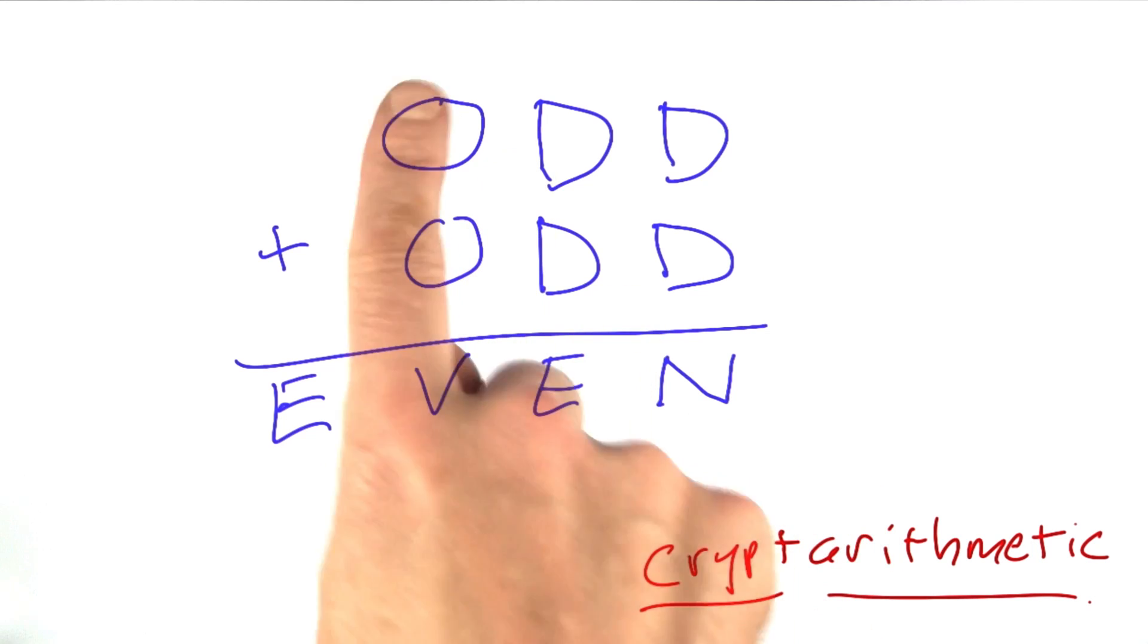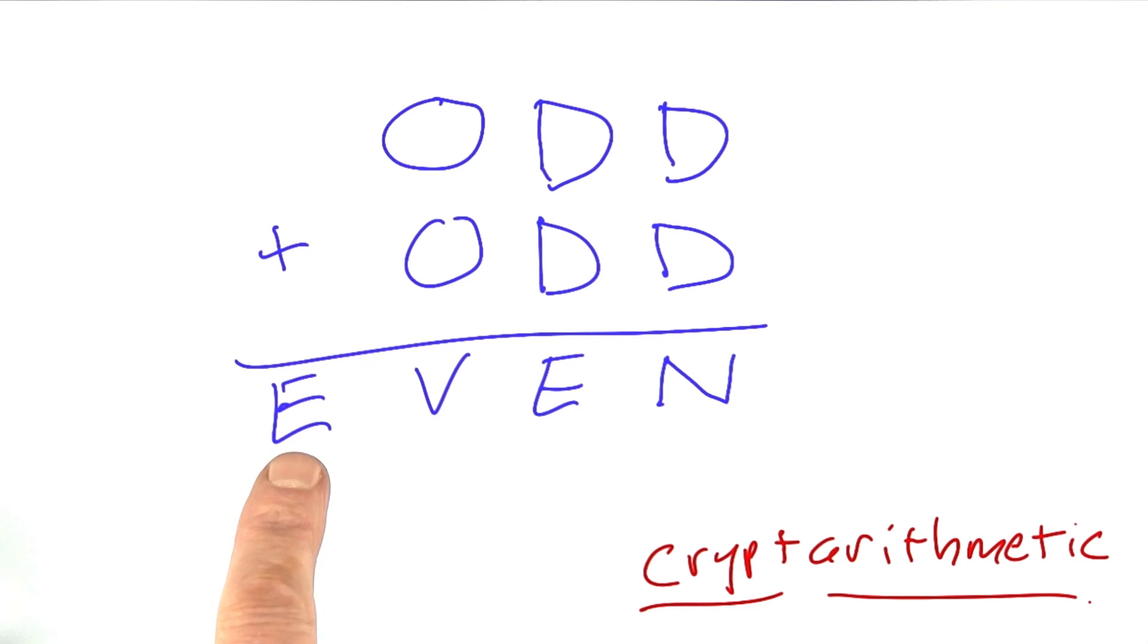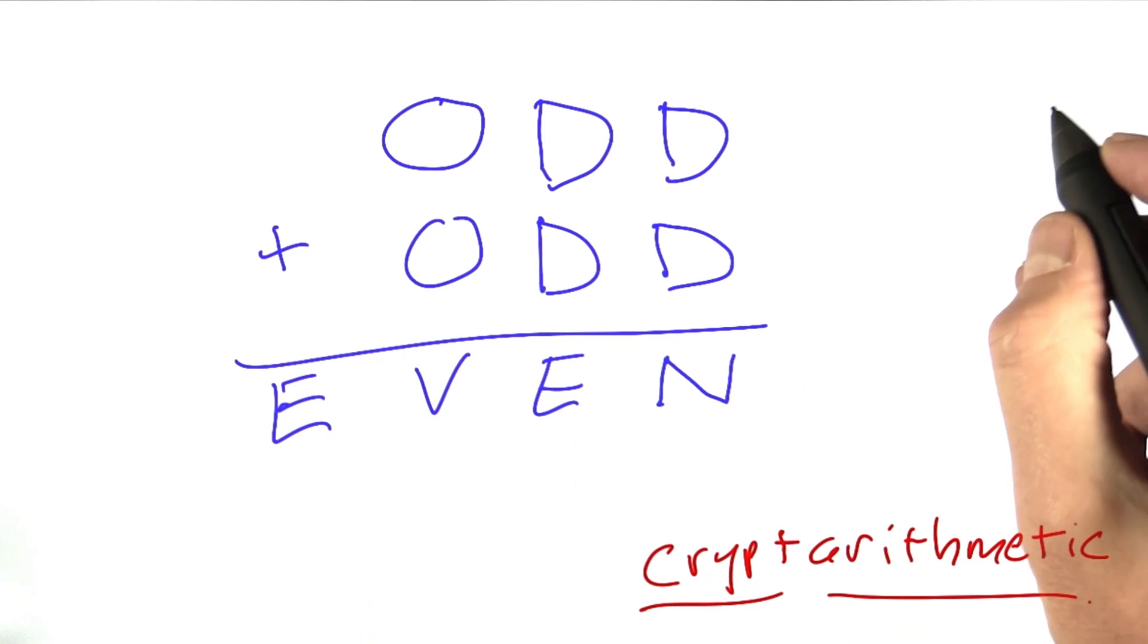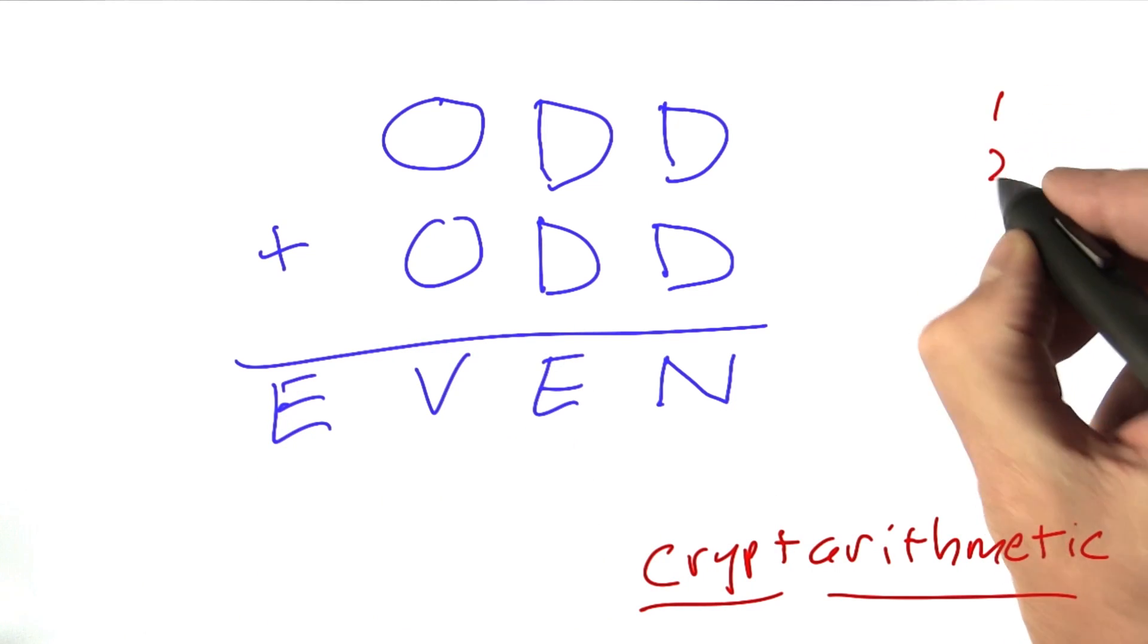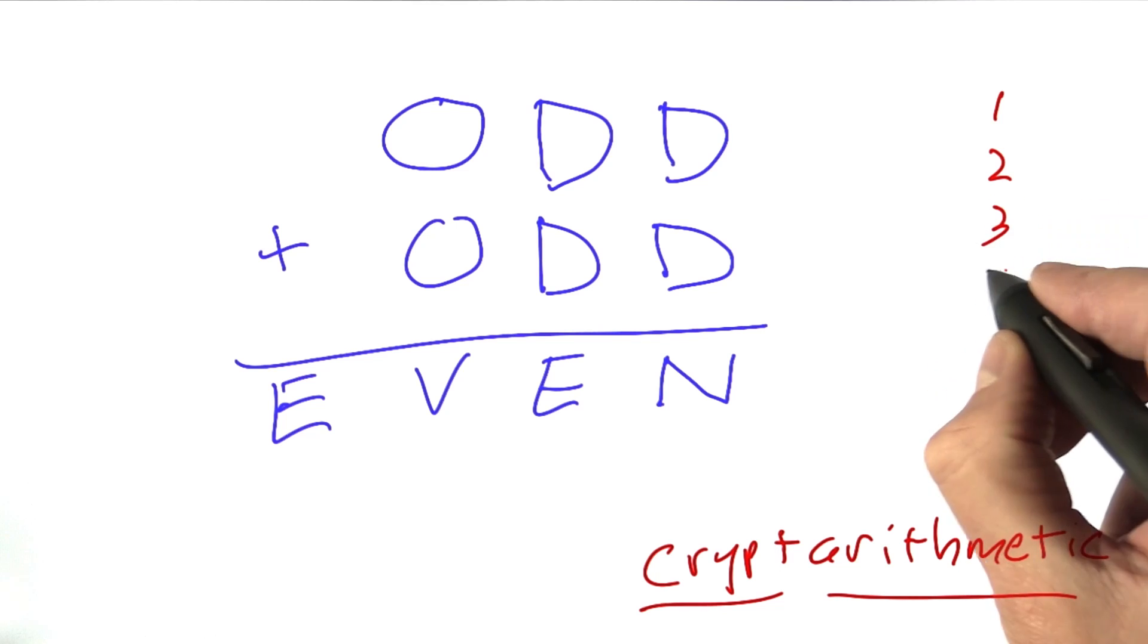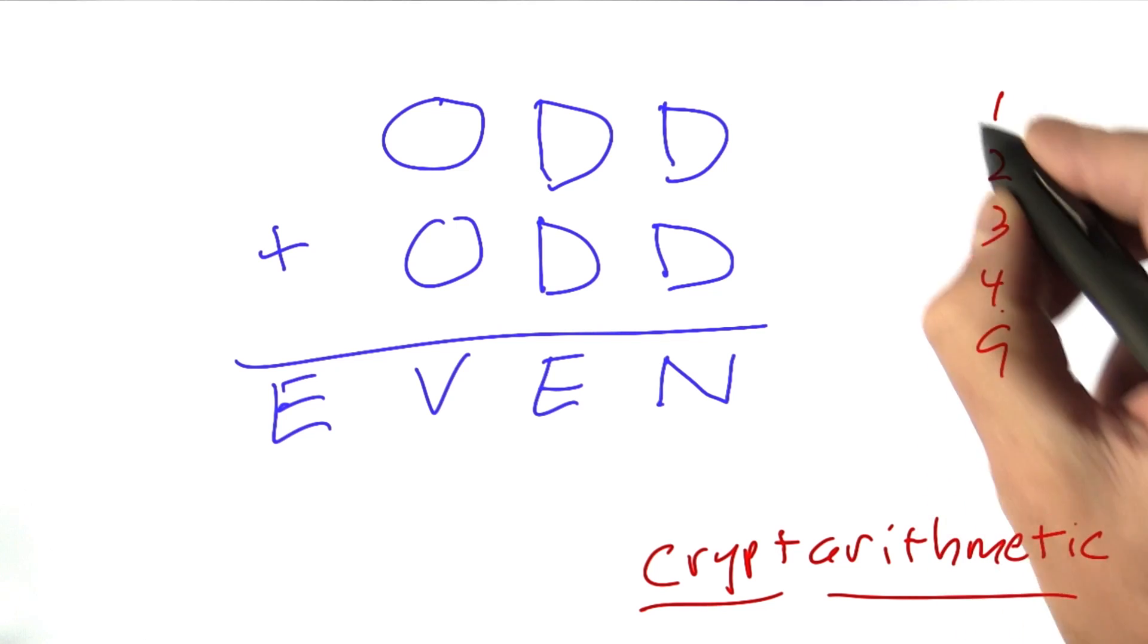For example, in this addition problem here, we have an addition problem of two three-digit numbers, and the result is a four-digit number, and E is that fourth digit. So what does that tell us about what the letter E must stand for? What digit it must stand for? Do you think E should be 1, or 2, or 3, or 4, or 9?